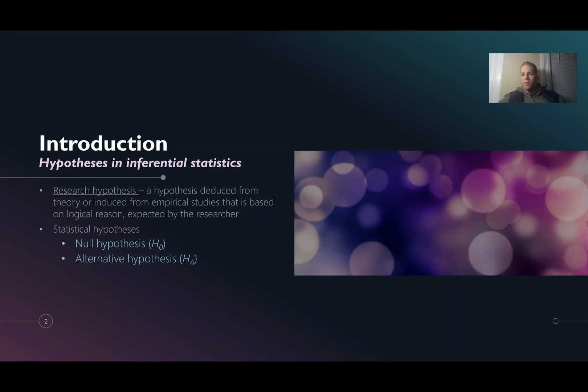This differs from a null hypothesis, which is a type of statistical hypothesis. The two types of statistical hypotheses include null and alternative hypotheses, which we'll now get into.